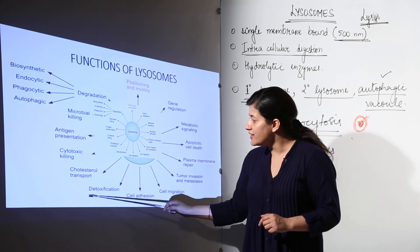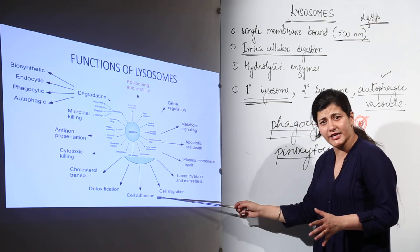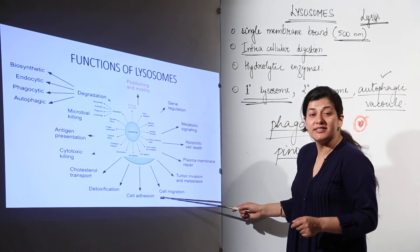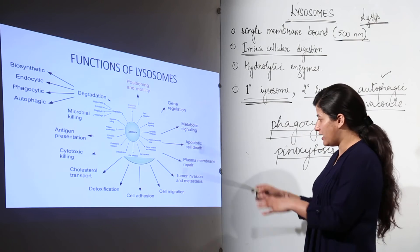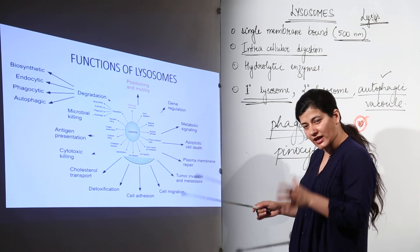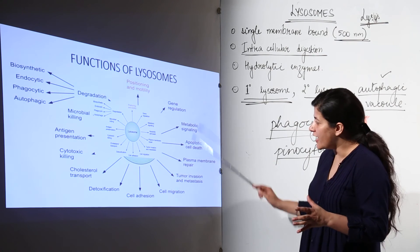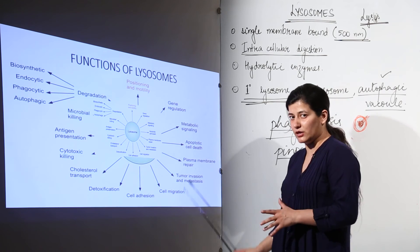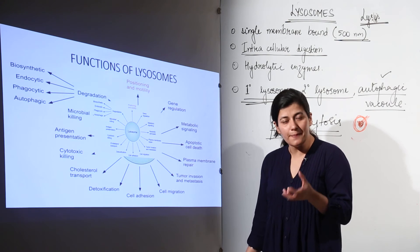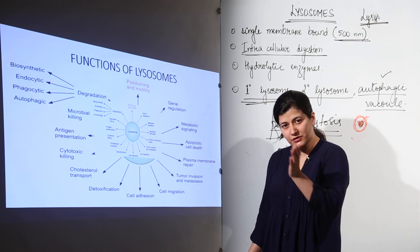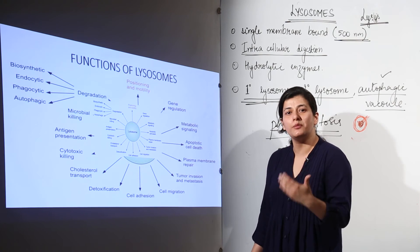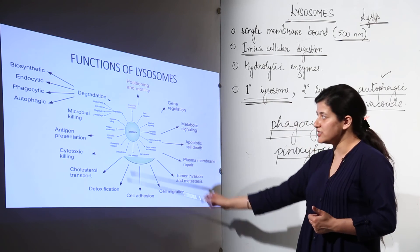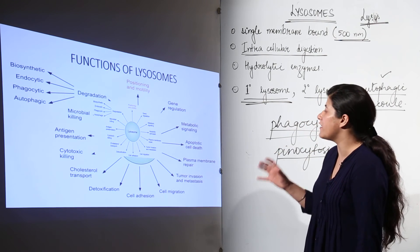Detoxification works similarly to degradation. Cell adhesion — if the cell has to join or attach somewhere — is also performed by lysosomes. Cell migration, tumor invasion, and metastasis are secondary functions. Plasma membrane repair is also taken care of by lysosomes. Apoptotic cell death — apoptosis is a process where a cell undergoes programmed death; when the cell has lived its life and must die, most of its components are digested, making lysosomes very important in apoptosis. Metabolic signaling and gene regulation are additional secondary functions.